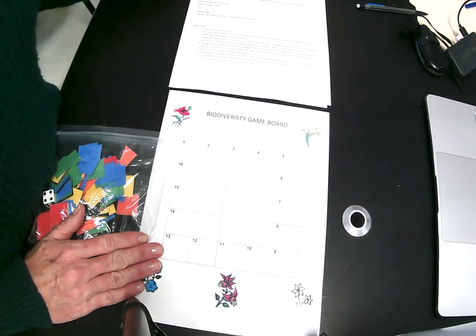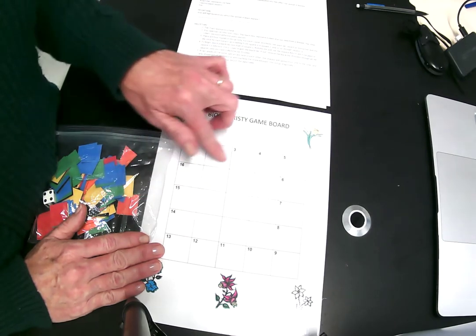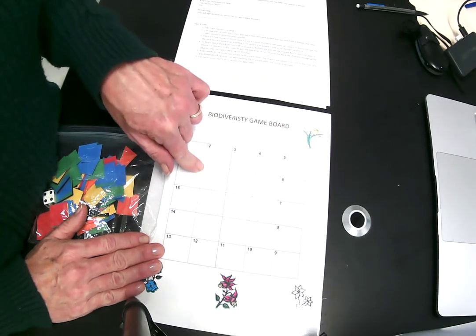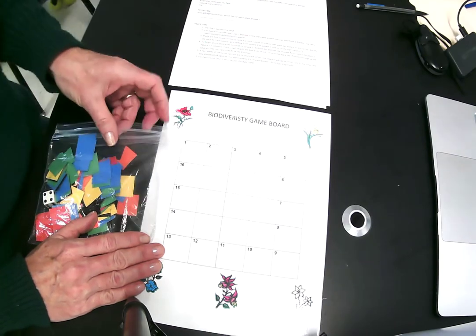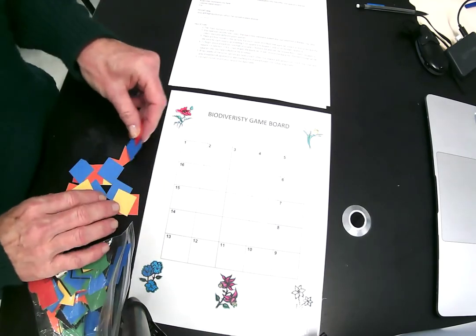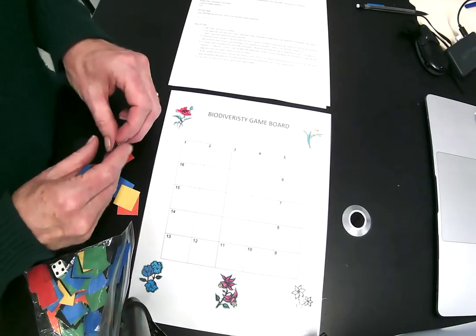So you are essentially going to mimic a field of flowers in this grid. You have four different species of flowers. You have a red flower, blue flower, yellow flower, and an orange flower.